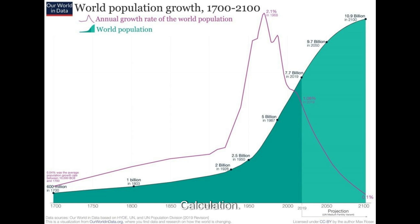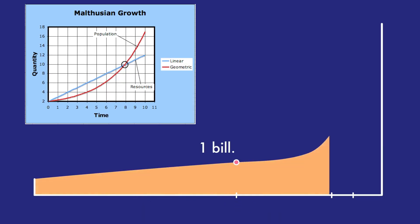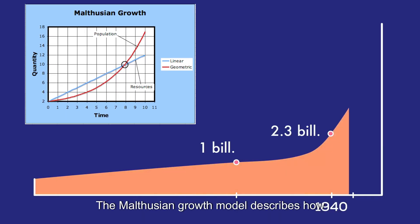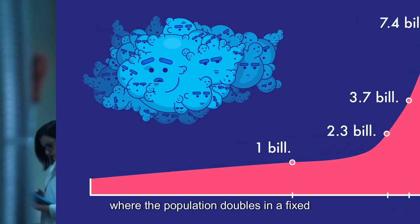Population growth calculation. In biology, exponential functions are used to model population growth. The Malthusian growth model describes how populations grow at a constant rate, where the population doubles in a fixed period.